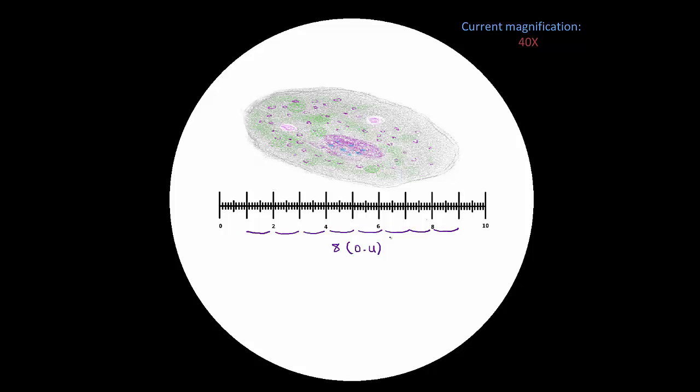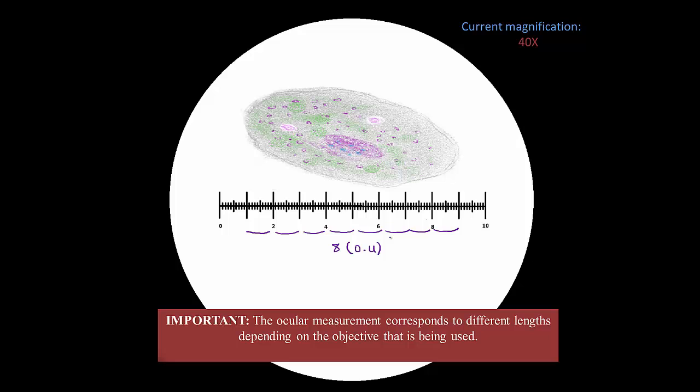This means that the ocular measurement corresponds to different lengths on the stage depending on the objective that we are using. I'll say that again. The ocular measurement corresponds to different lengths depending on the objective that is being used. This is why it is necessary to calibrate the ocular micrometer. So we're going to have to figure out a way to convert our ocular micrometer recordings to absolute physical measurements with units.